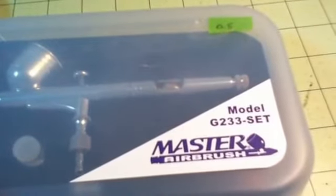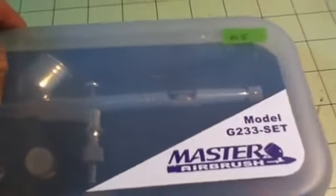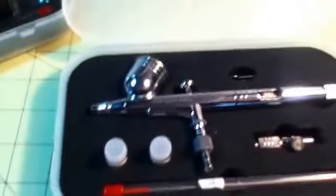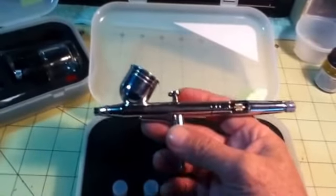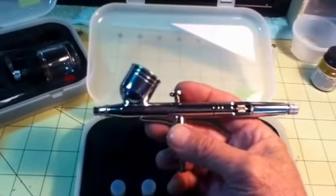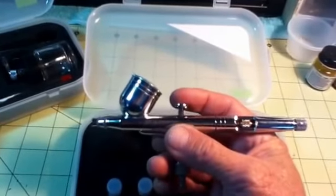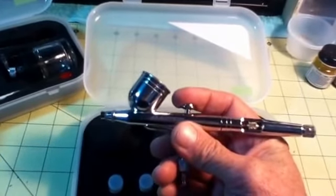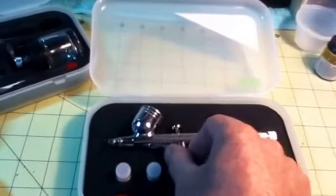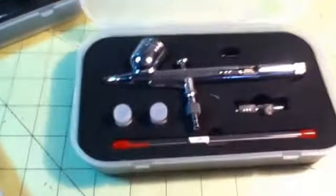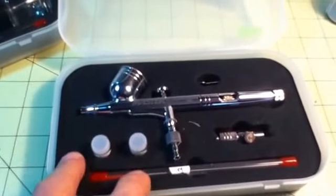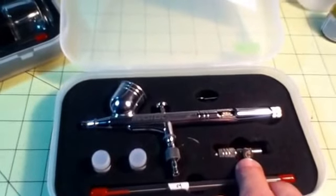This one is the 233 set. This one has a bigger cup. They are all double action, and all of them come with three tips: a .2, a .3, a .5, and they come with a quick disconnect.